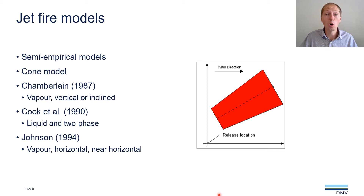One of those models is referred to as the cone model because the Jetfire flame is represented by a truncated cone. This kind of model was introduced by Chamberlain in 1987 for vertical or inclined vapor jet fires. Modifications to that model were later made to account for liquid and two-phase jet fires by Cook et al. in 1990, and further modifications were made by Johnson in 1994 to account for horizontal jet fires.